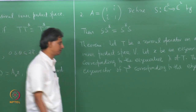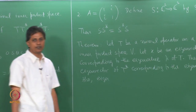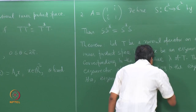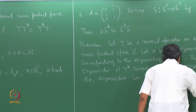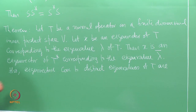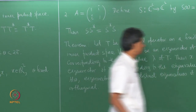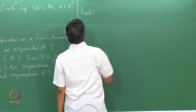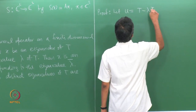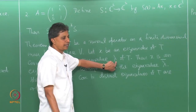We must compare this result with the case of self-adjoint operators. For self-adjoint operators, we showed that eigenvalues are real numbers, and eigenvectors corresponding to distinct eigenvalues are orthogonal. Now let us see the proof. T is given to be a normal operator. Define U = T − λI, where λ is the eigenvalue we started with.